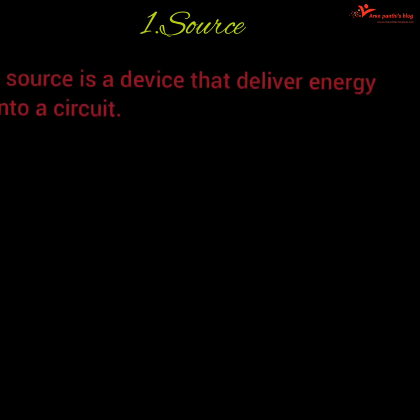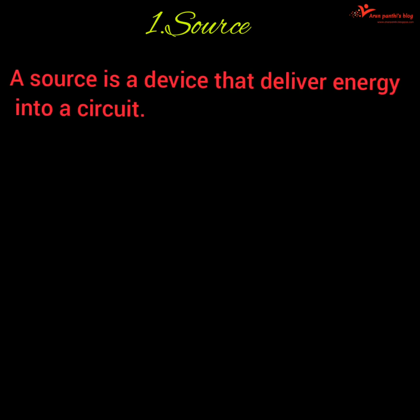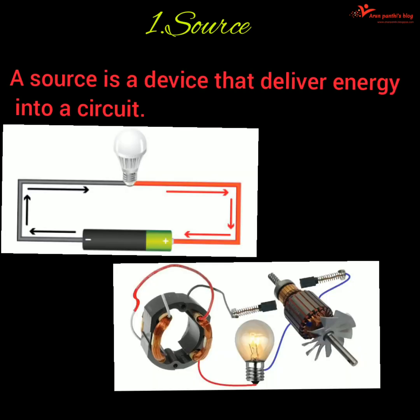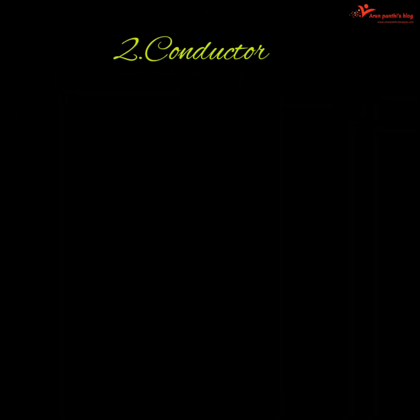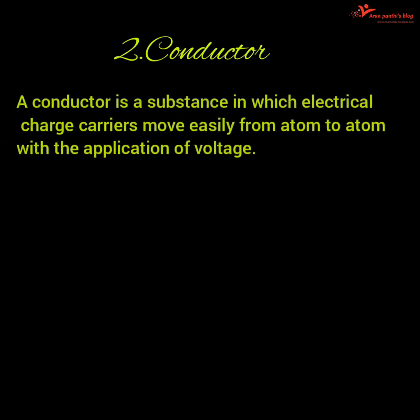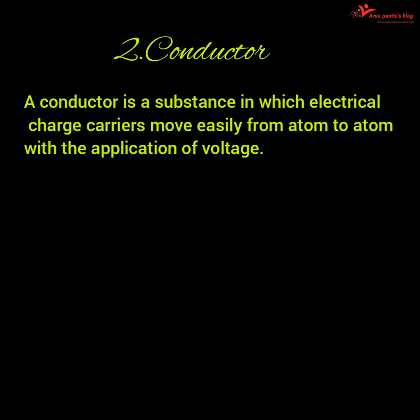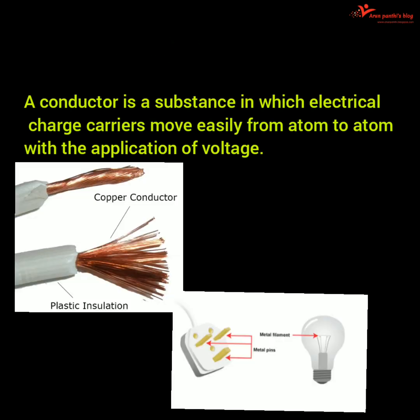A source provides energy to the circuit, such as a battery or generator. A conductor is used to carry current, such as wire or cable.